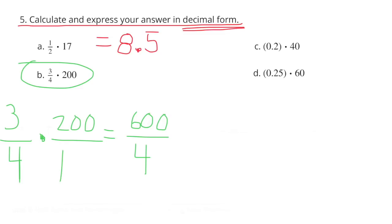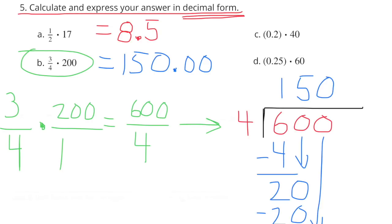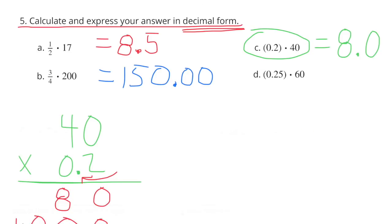B. 3 fourths times 200. 3 fourths times 200 over 1 equals 600 over 4. And 600 over 4 means 600 divided by 4. 600 divided by 4 equals 150.